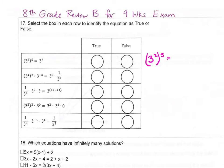When we have a power raised to a power, we keep the base and multiply the exponents. So we get 3 to the 10th power. That is not 3 to the 7th power, so that is false.